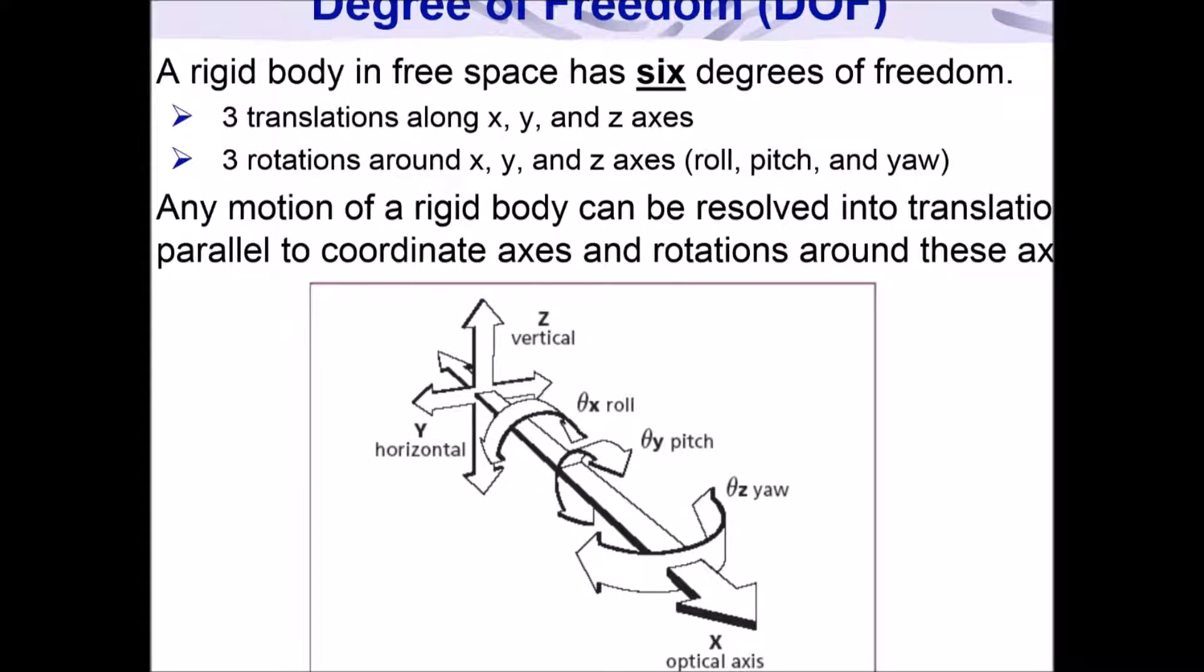A degree of freedom of a rigid body is an allowed motion, either translational on an axis or rotational about an axis. A rigid body in free space has six degrees of freedom: pitch, yaw, roll, and x, y, and z translation.